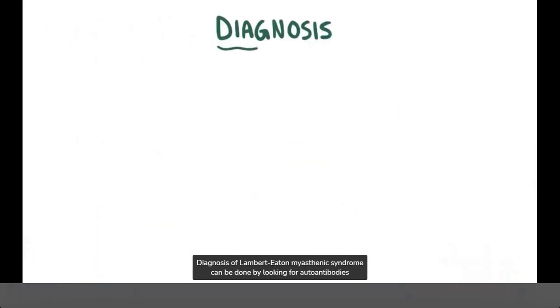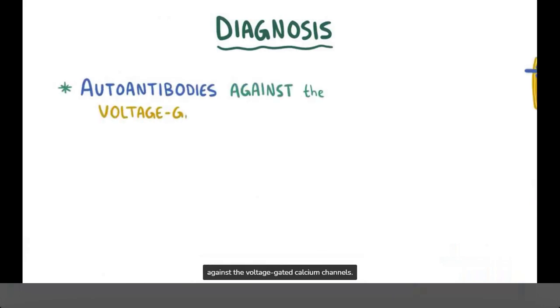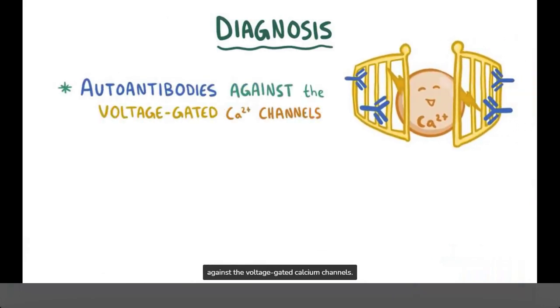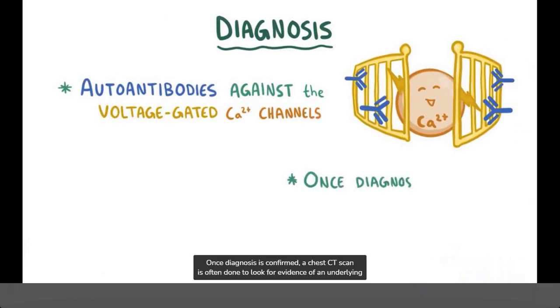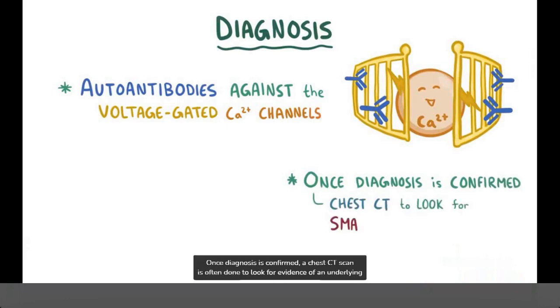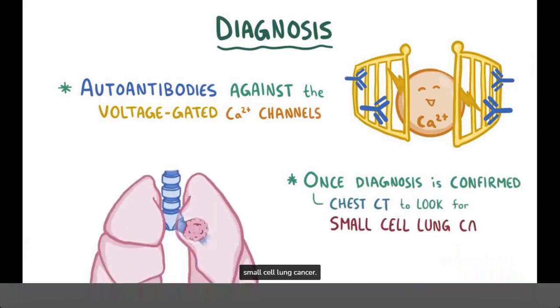Diagnosis of Lambert-Eaton myasthenic syndrome can be done by looking for autoantibodies against the voltage-gated calcium channels. Once diagnosis is confirmed, a chest CT scan is often done to look for evidence of an underlying small cell lung cancer.